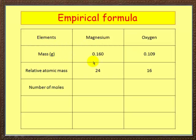What are the reacting masses? Well, we know from our results table it's 0.16 and 0.109. Relative atomic mass - do you remember this? We can get this from our periodic table. Magnesium 24, oxygen 16.